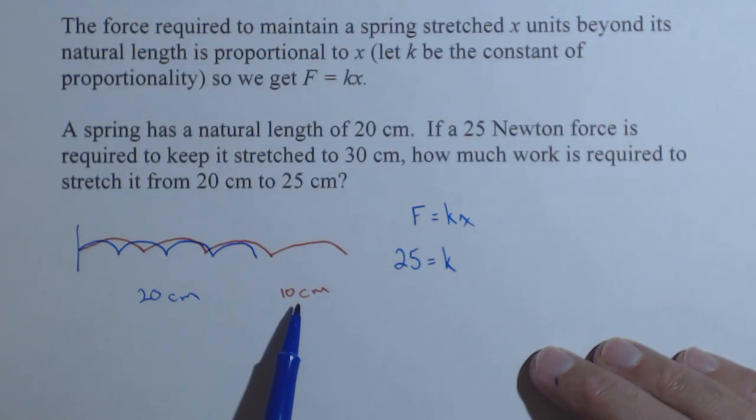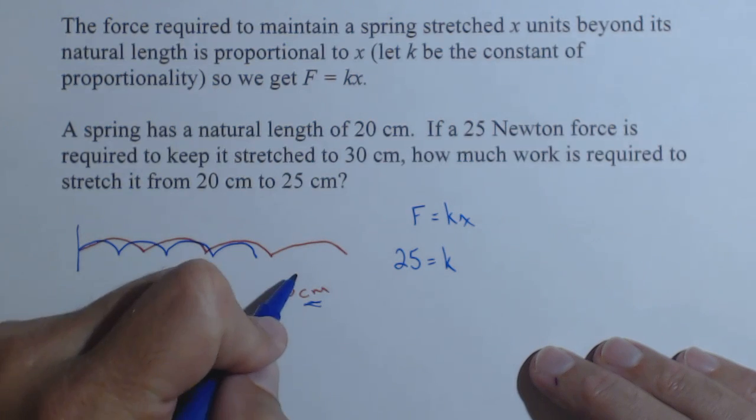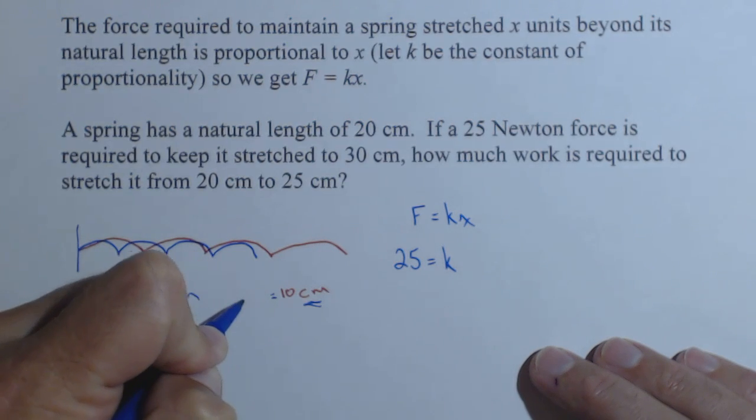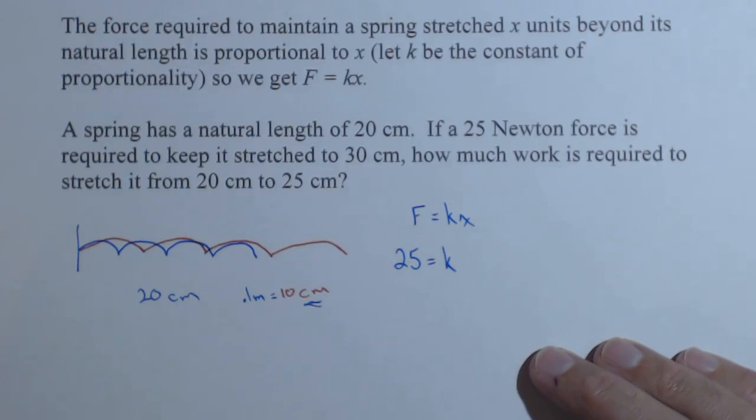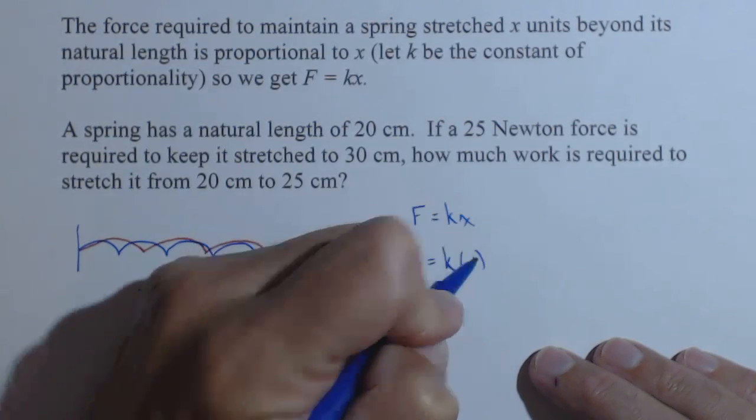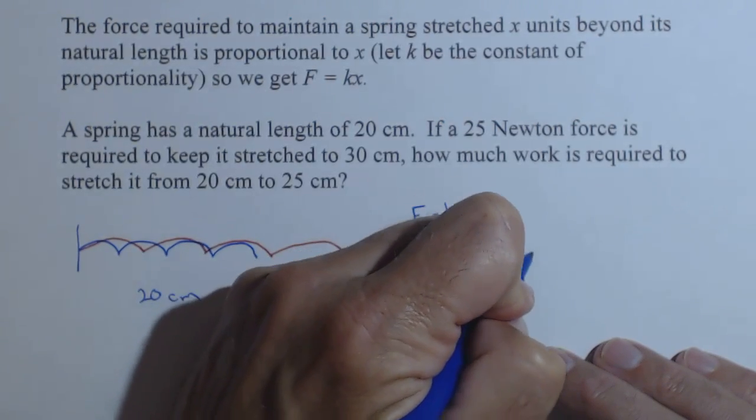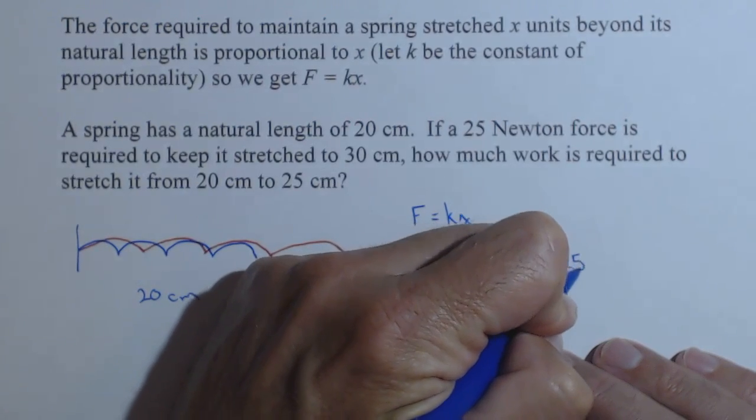The other thing that we need to attend to is our units. We want to be in meters. Well, 10 centimeters is 0.1 meter. So we're going to put 0.1 in here for x, which gives us k = 250.